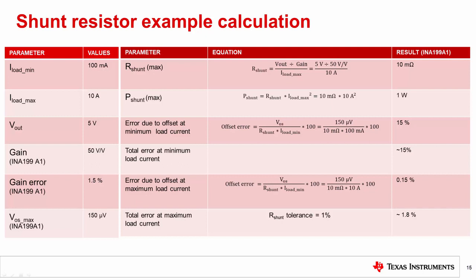In this example, the minimum current is 100 milliamps and the maximum current is 10 amps. We chose the INA199A1 as the current sense amplifier for this application, which has a maximum V_OS spec of 150 microvolts. In this example, we will ignore other sources of amplifier error for simplicity. The gain of this device is 50 and the required full-scale output voltage is 5 volts.